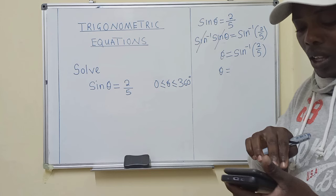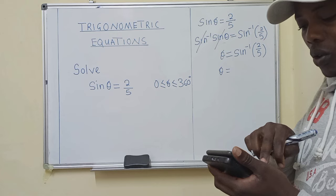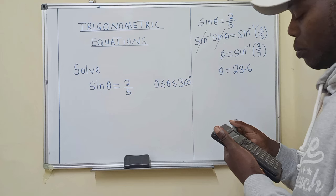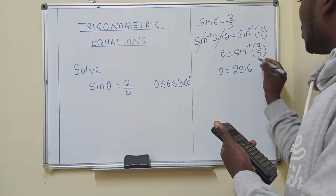So now we get our calculator. We punch sine inverse of 2 over 5. What are we getting? We are getting 23.6 in one decimal place. So this is one of our solutions, 23.6 degrees.